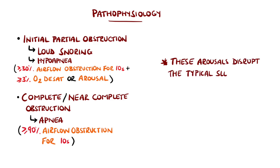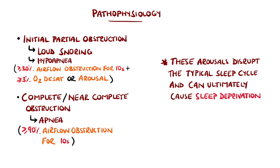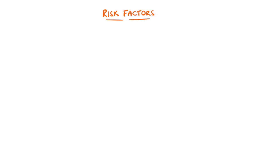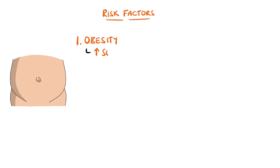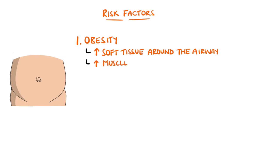A cycle is therefore generated, alternating between periods of deeper sleep and higher wakefulness, where the typical sleep cycle is interrupted, which ultimately disrupts the quality of sleep and can cause sleep deprivation. Risk factors are thought to be obesity, as it increases the amount of soft tissue around the airway, but people of normal body mass indexes also suffer the condition, possibly due to increased muscle mass.